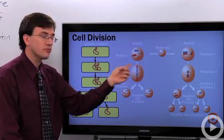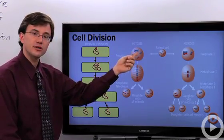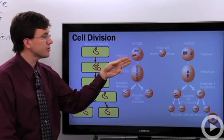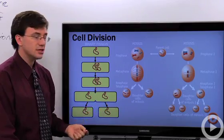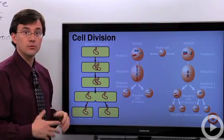Whereas with mitosis, you start off with one cell and you have lots of molecules of DNA. In this example, there's four different molecules of DNA. By the end of mitosis, you wind up with two new daughter cells, each with four molecules of DNA.